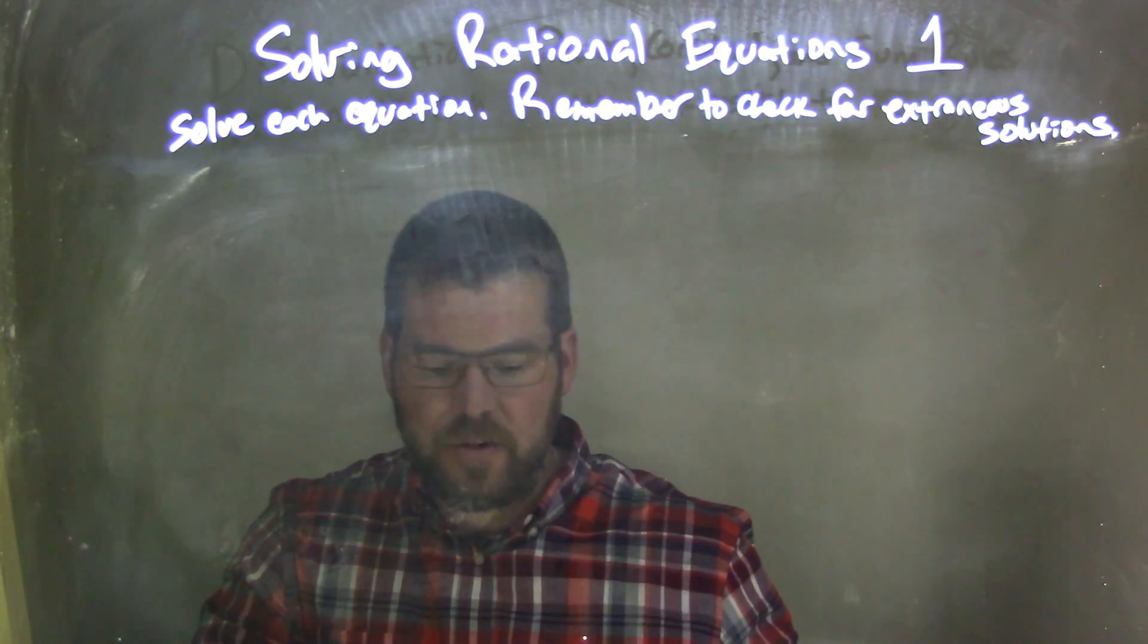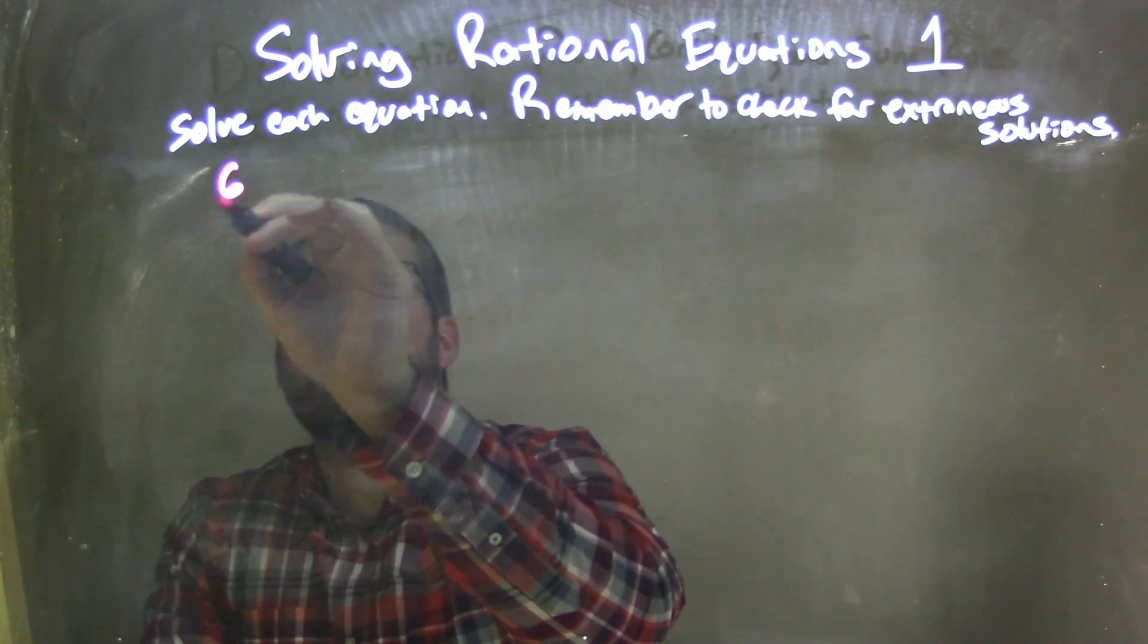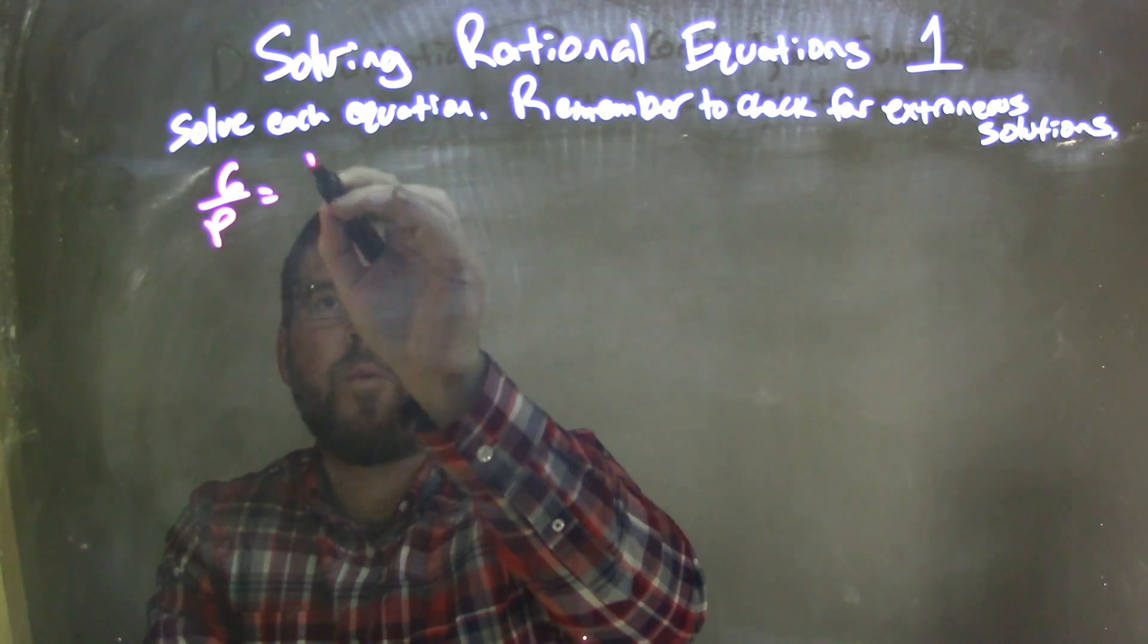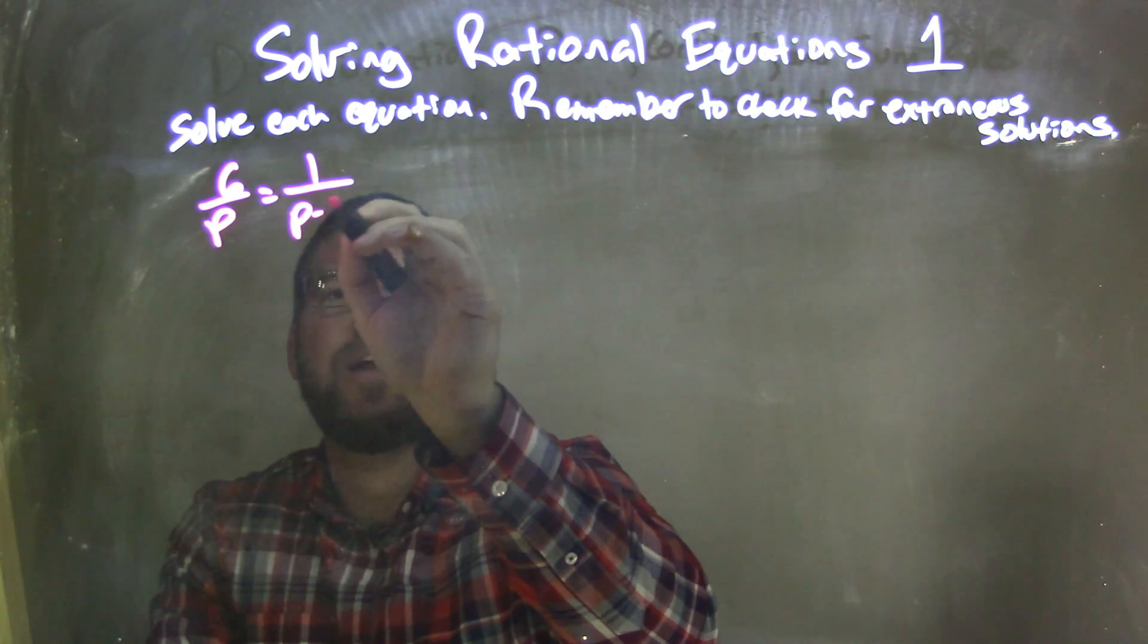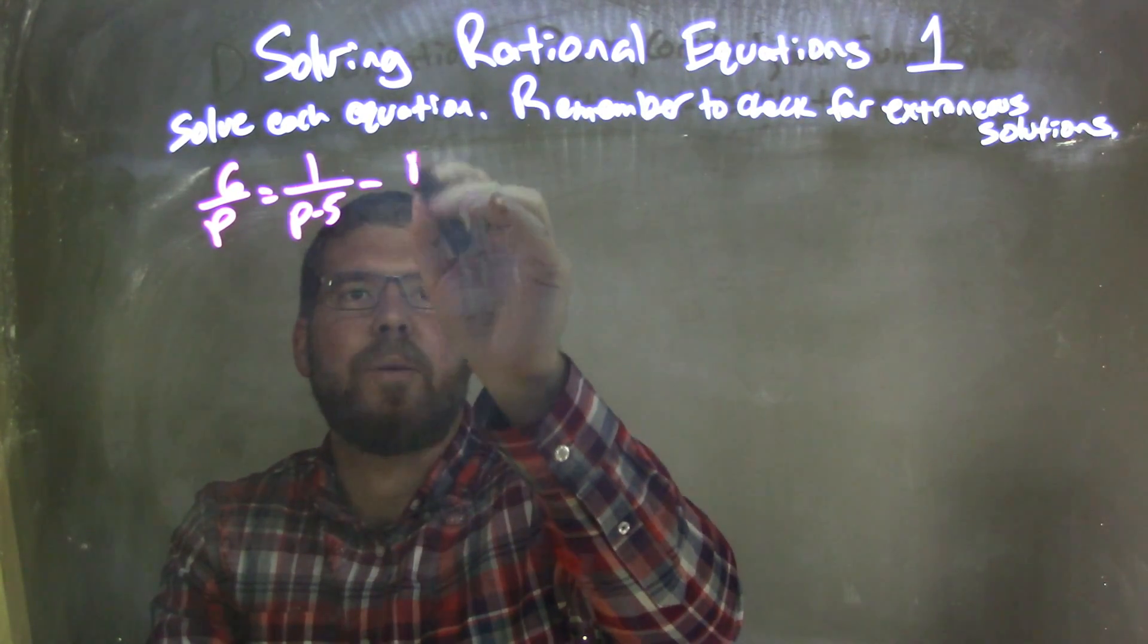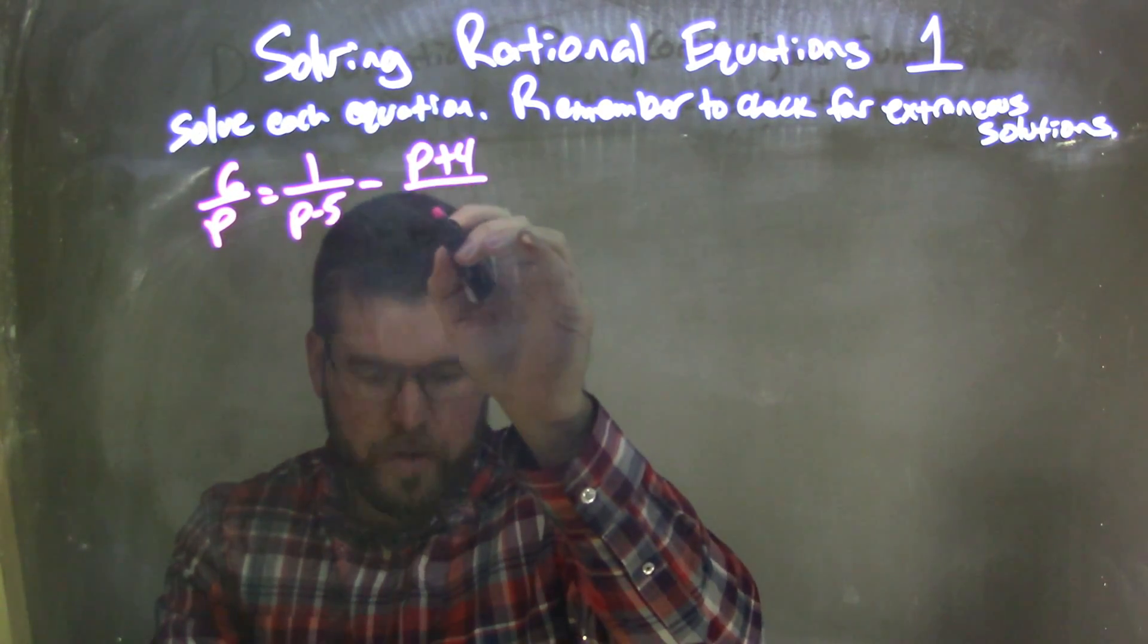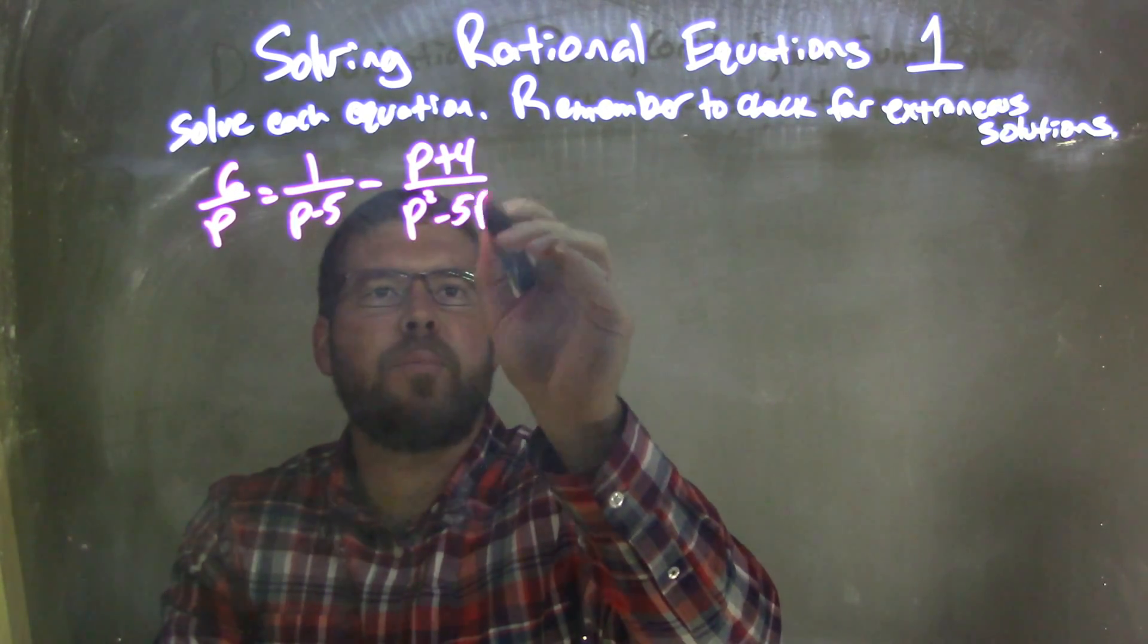So if I was given this equation: 6 over p equals 1 over p minus 5, minus p plus 4 over p squared minus 5p.